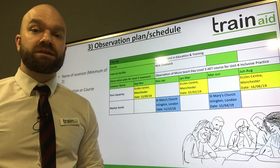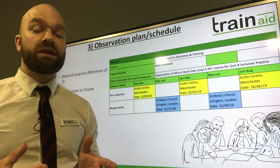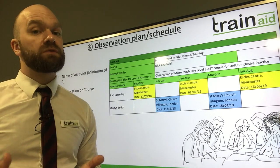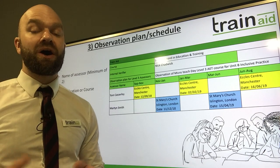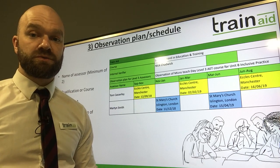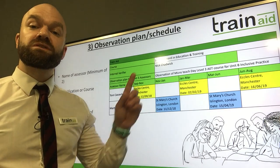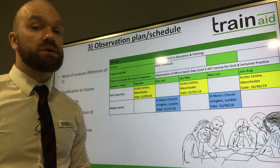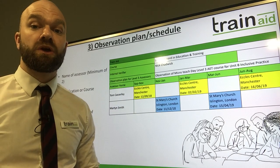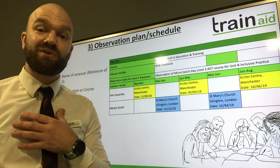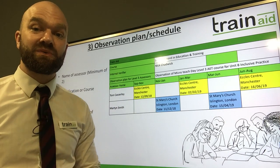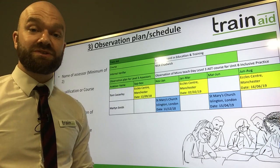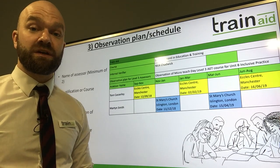The observation plan details when and where and what elements of your course or qualification are going to be observed. As we can see the course behind me, we have the Level 3 Award in Education and Training. We have myself as the IQA and we also have two assessors that I am going to be monitoring.